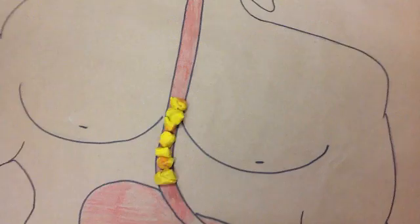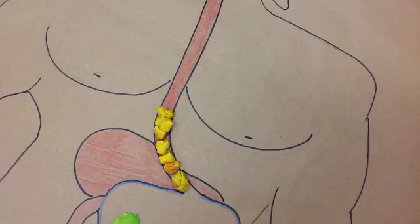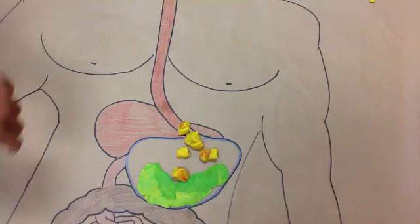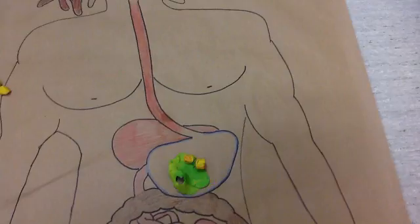Your food turns into small round pieces called bolus. The bolus then moves down your esophagus. The esophagus is a long muscular tube that pushes the bolus down with muscular contraction. The bolus then enters the stomach.